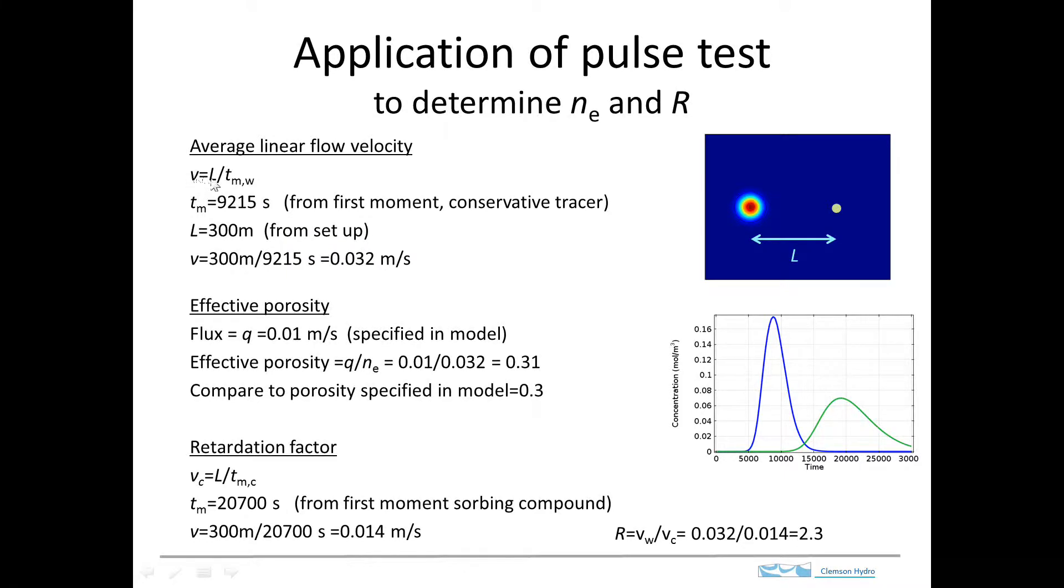and these curves are actual observations that we made at a point down here. So the average linear flow velocity is the distance divided by the travel time. And so we can determine the travel time from the blue curve by taking the first moment of this curve.